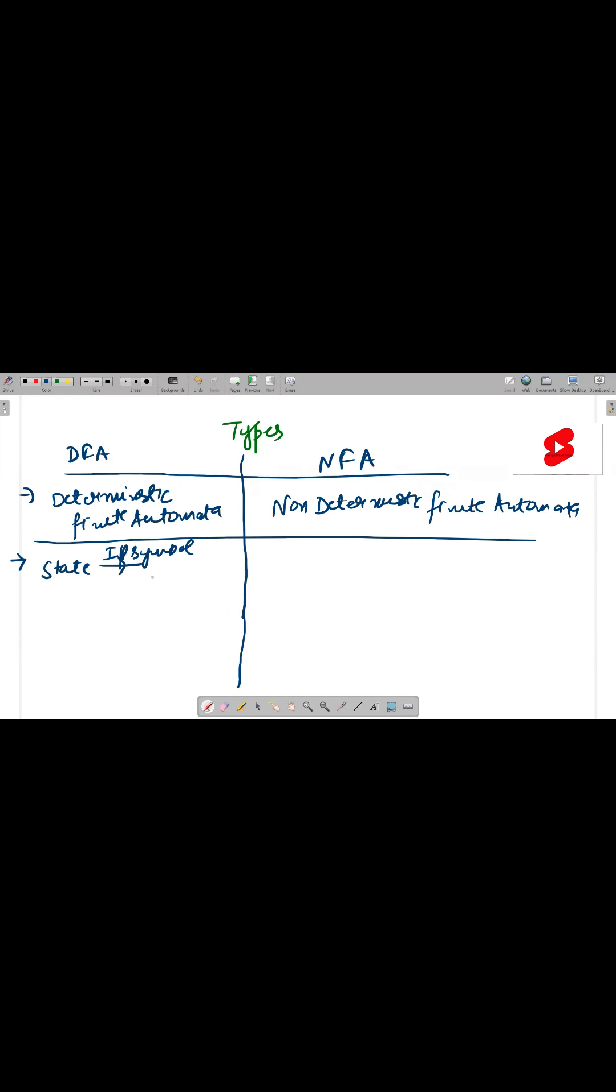Means, if I give Q0 A, I can only get Q1. This is not the case in NFA. The case is, if I give Q0 A, I might get Q1, I might get Q2.